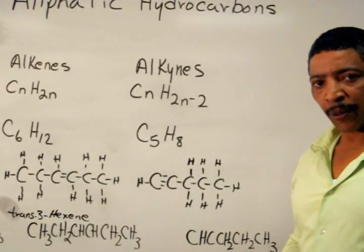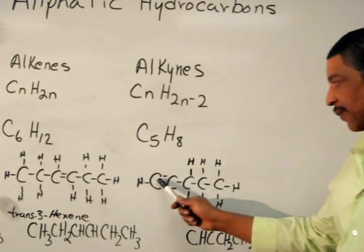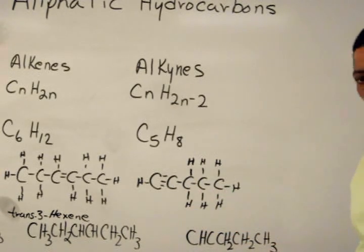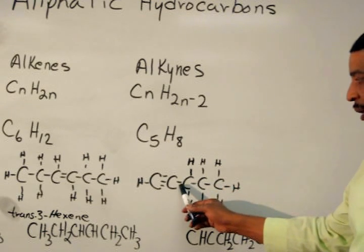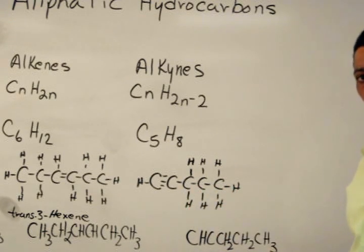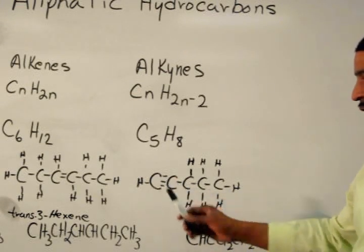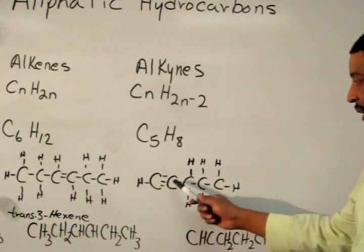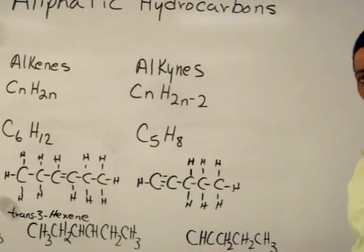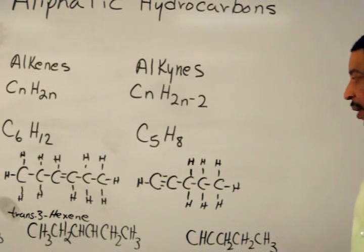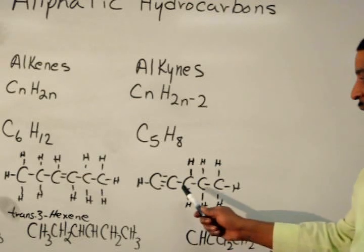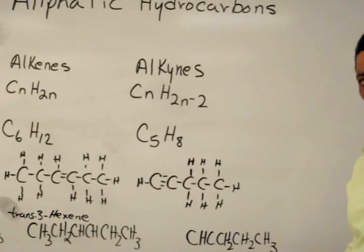To write the structural formula for this compound, simply write five carbons in a row connected by single bonds, where two carbons are connected by a triple bond. This triple bond is behind the first carbon. Therefore, this particular compound is known as 1-pentyne. If the triple bond were located behind the second carbon, the compound would be called 2-pentyne.